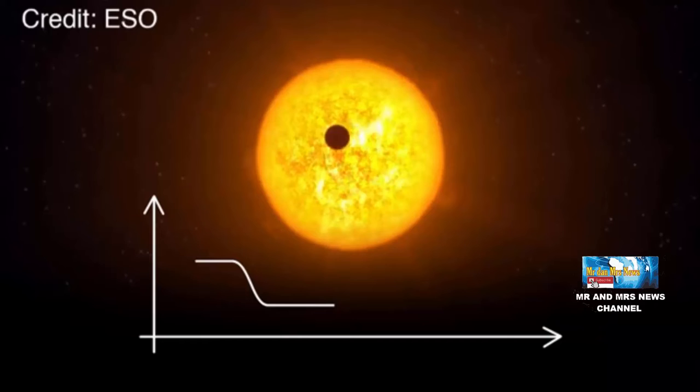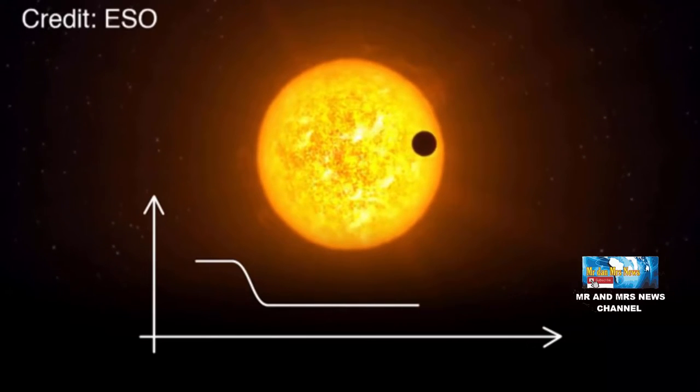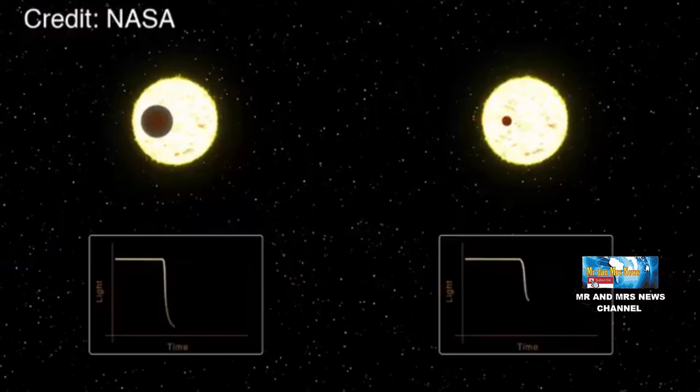Exoplanet GJ367b juga sangat dekat dengan bintang katai merah dingin yang umumnya dan memang diketahui menampung banyak planet dalam satu sistem.